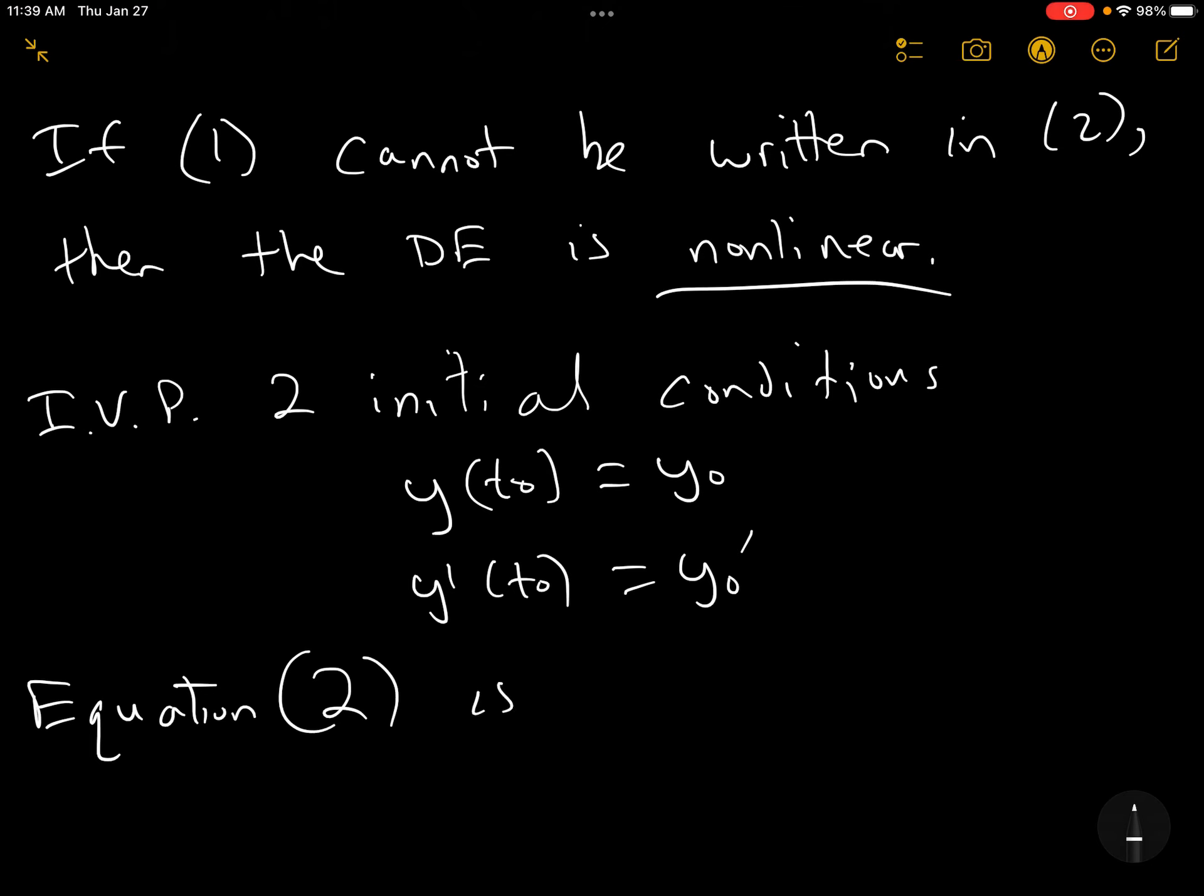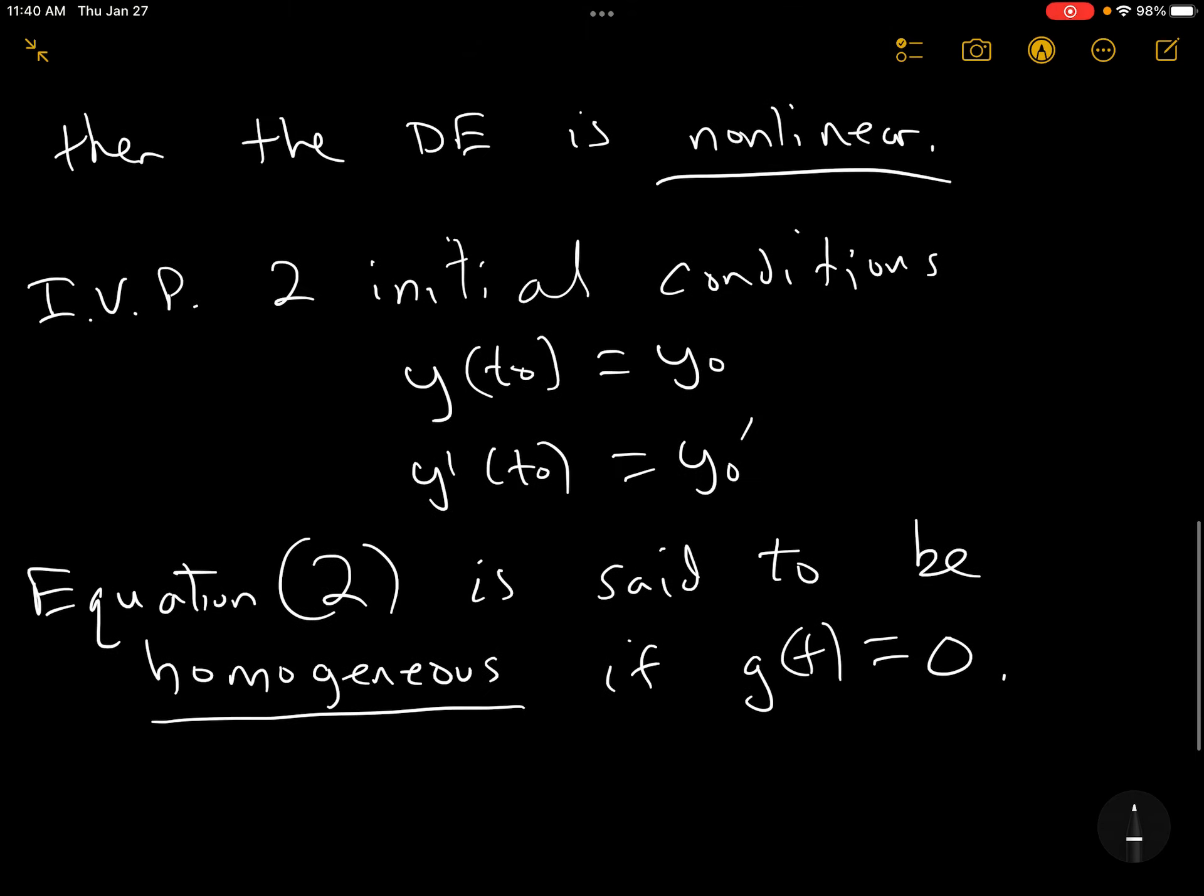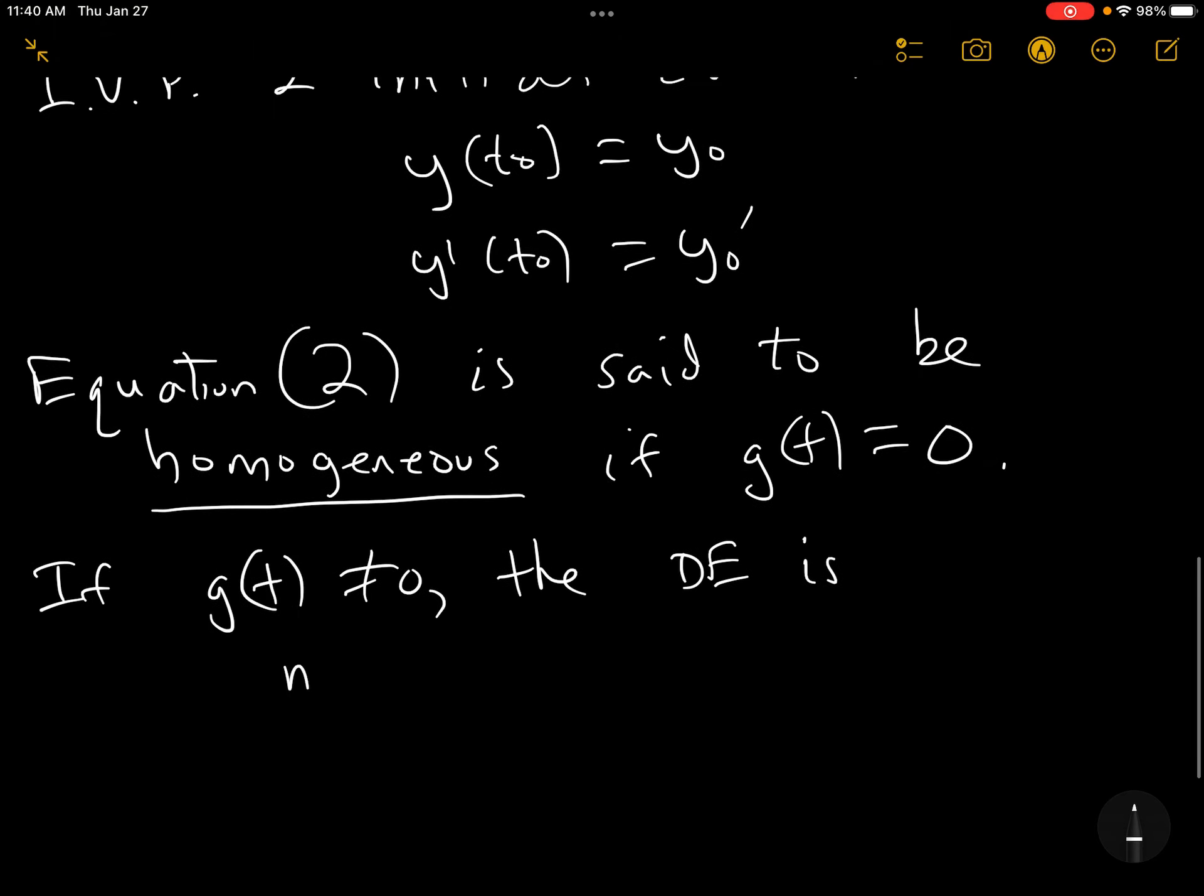And if you want to write one of these DEs as an initial value problem, you now have to have two initial conditions. And you'll see why in a little bit here. The first one is going to be something like Y of T naught equals Y naught. And the second initial condition is going to be the derivative. And when you have these initial conditions, you can find a particular solution. So an IVP has two initial conditions.